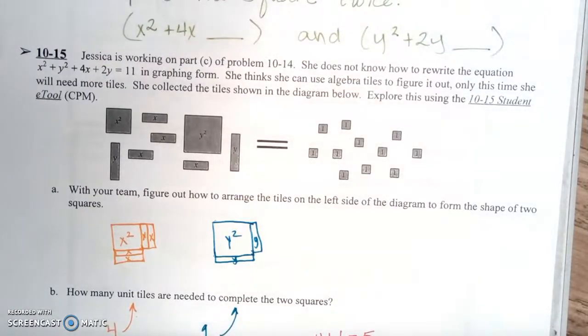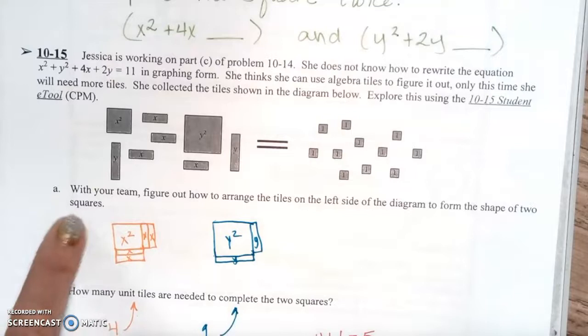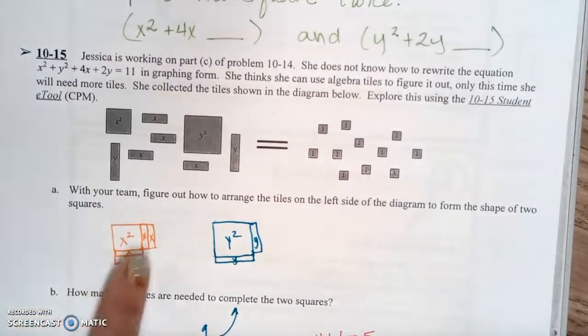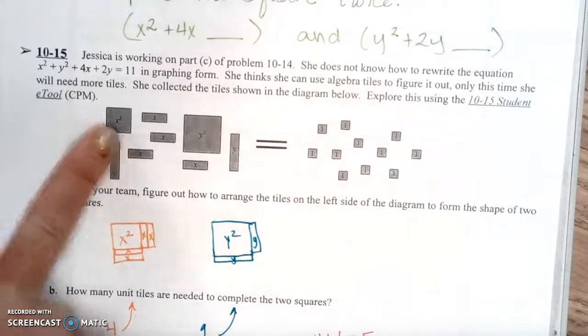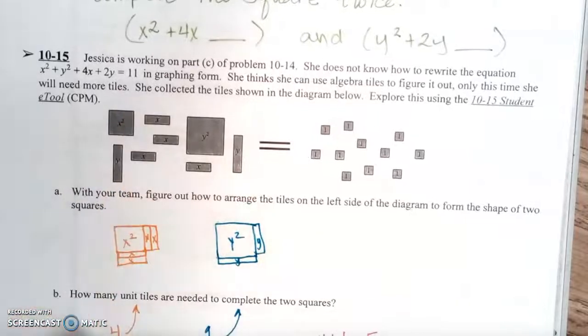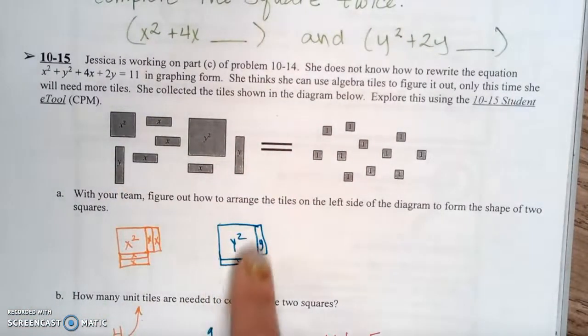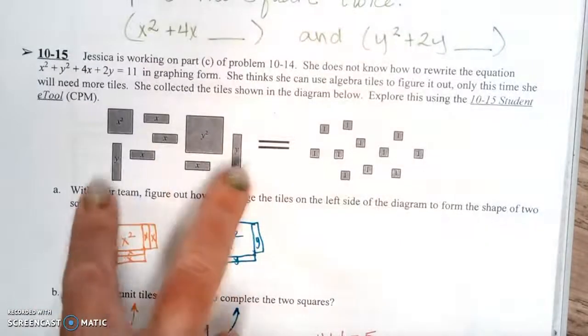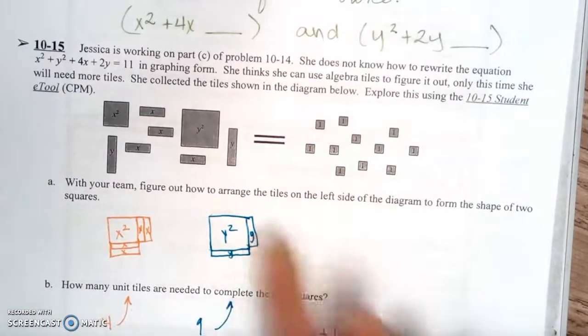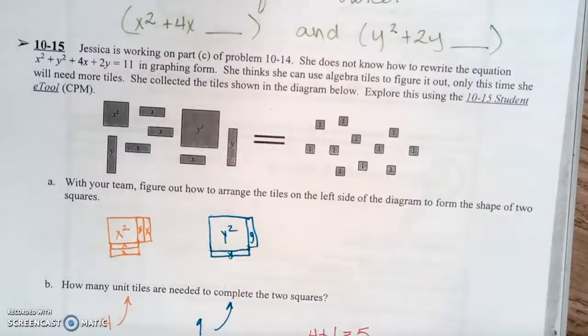So with your team, figure out how to arrange the tiles on the left side of the diagram to form the shape of two perfect squares. So we're going to take the x² and these four x's. So put two of them here and two of them here. Then we're going to take this y² and these two y's. Put one of them here and one of them here. And then we need to figure out how many tiles are needed to complete these two perfect squares.